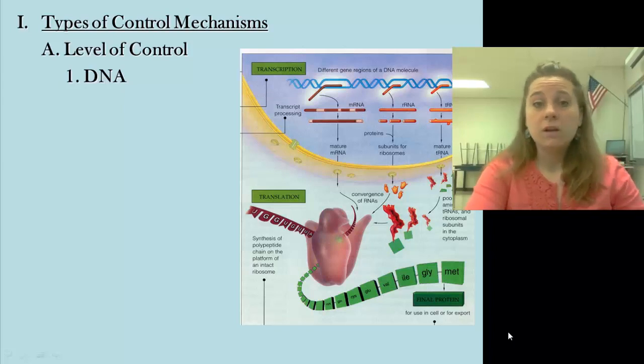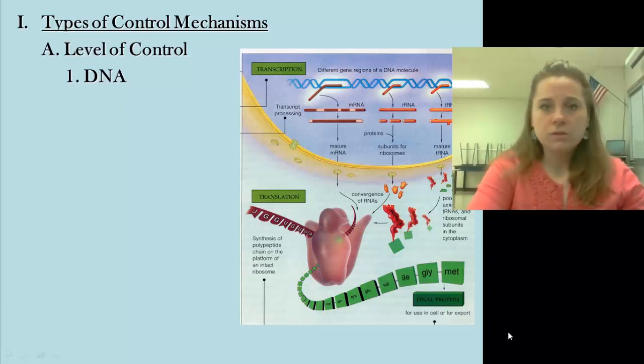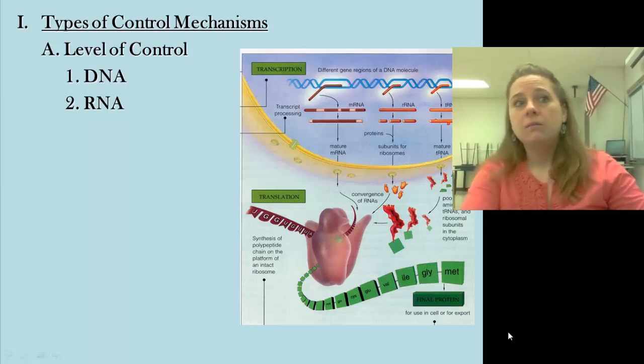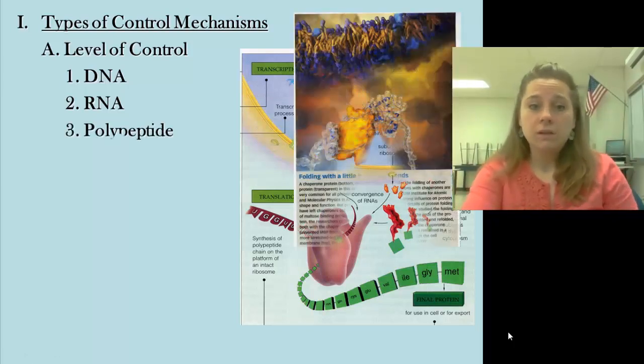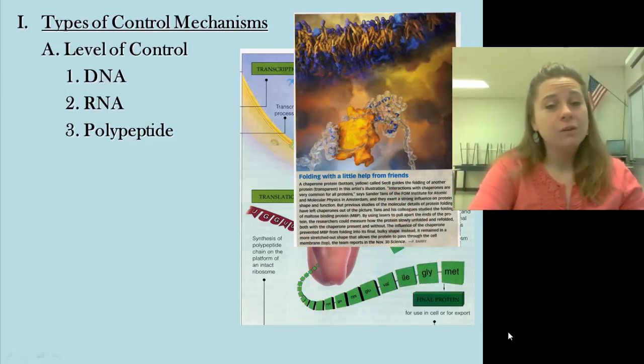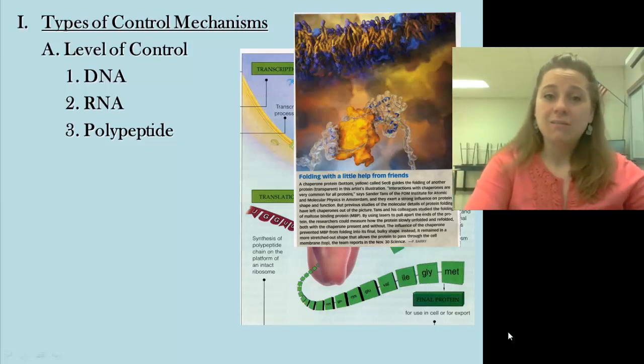We can control that gene right at the DNA. Shut down the actual transcription. No proteins made. You could shut it down at the RNA level. So say the transcript's made, but do something to prevent it from actually attaching to a ribosome and building that.